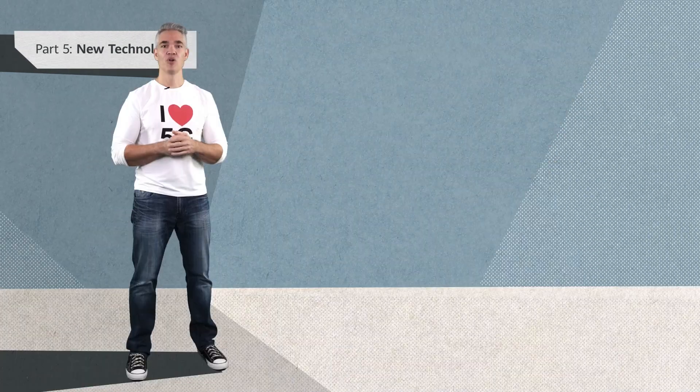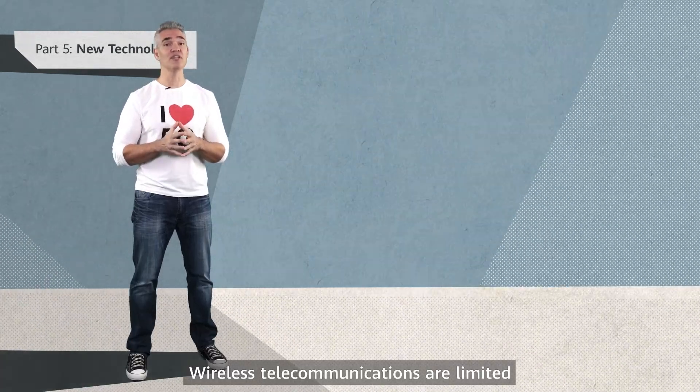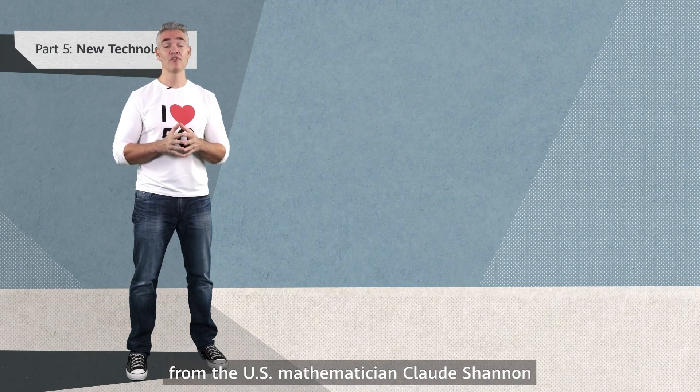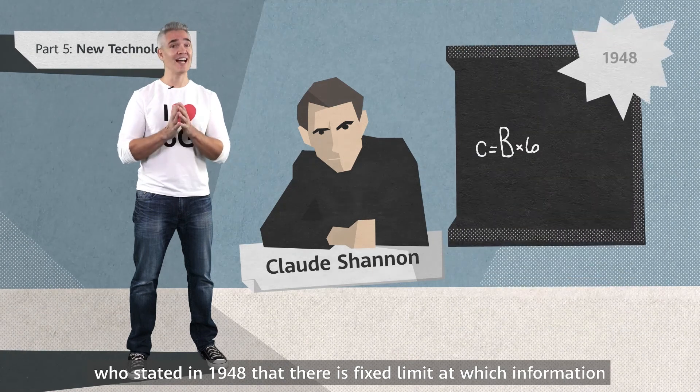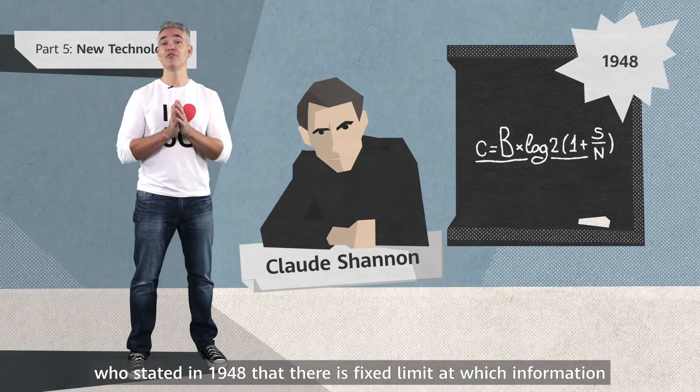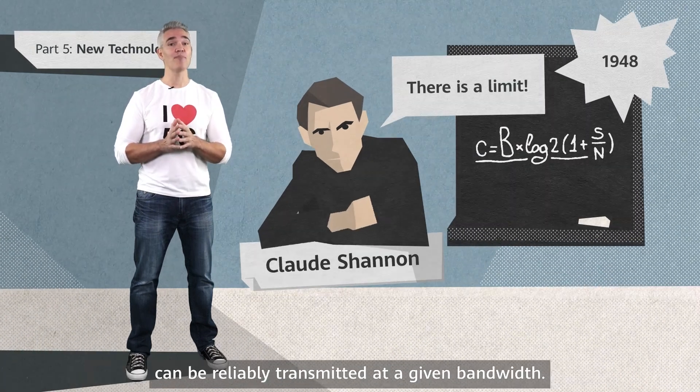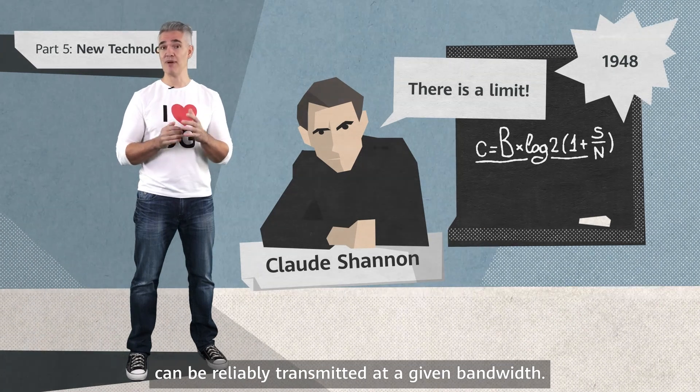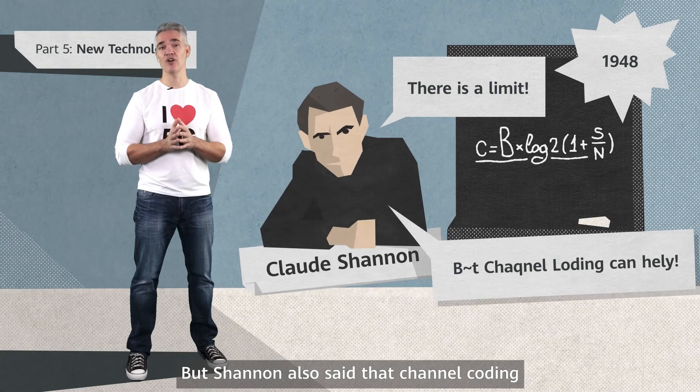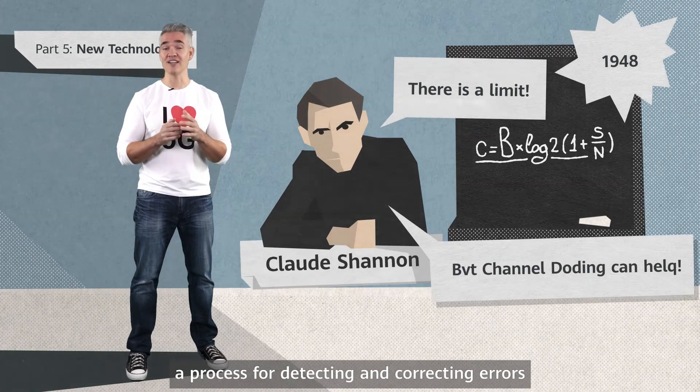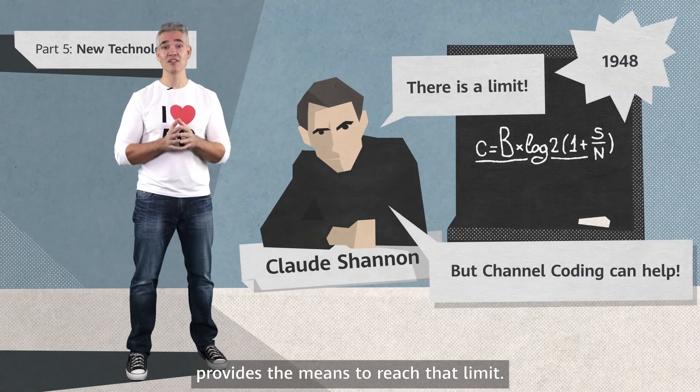Wireless telecommunications are limited by the constraints of a theorem from US mathematician Claude Shannon, who stated in 1948 that there is a fixed limit at which information can be reliably transmitted at a given bandwidth. But Shannon also said that channel coding, a process for detecting and correcting errors, provides the means to reach that limit.